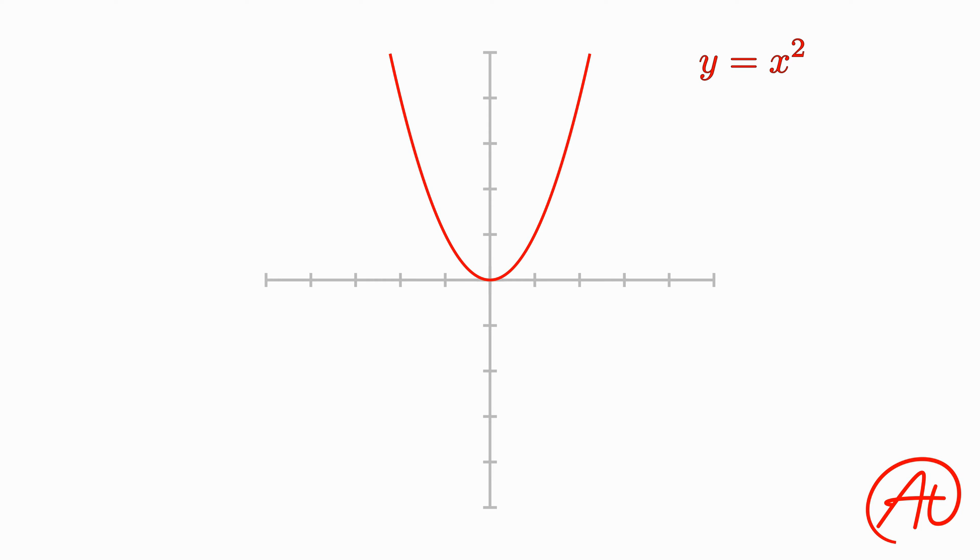Well, the slope at a given point along the curve is defined by the line that is tangent to the graph, or only touching the graph at that single point. And we already know how to find the slope of a line, so it should be pretty easy, right?